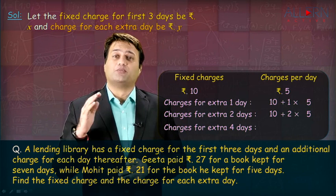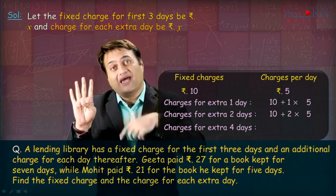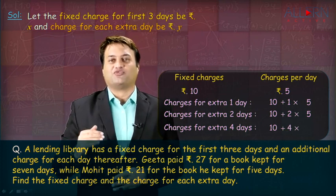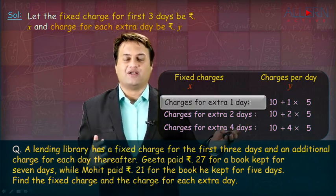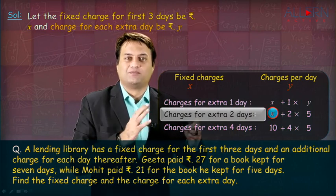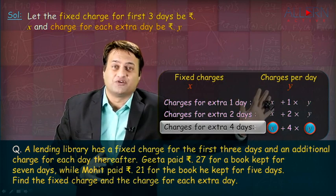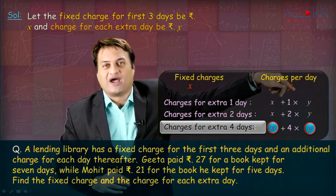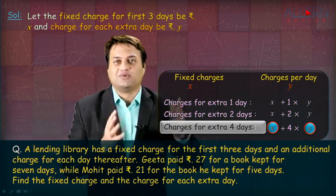Now, say if a book is kept for 7 days — out of 7 days, 3 days will be the fixed charge, and the remaining 4 days would be the extra charge. So it would be fixed charge Rs. 10 plus 4 days extra charge, that is 4 into 5. In general, if the fixed charge is Rs. X and the extra charge per day is Rs. Y, then for 1 extra day it is X plus 1Y, for 2 extra days X plus 2Y, and for 4 extra days X plus 4Y. X is the fixed charge and remains the same in the equation — the only thing that changes is Y as per the number of extra days.